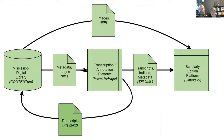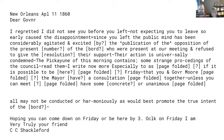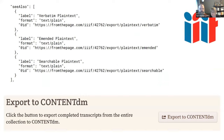Now we have a transcript we could use to update the digital library metadata, but there's a big problem: the transcript is richly annotated and includes names of contributors, tags, and a lot of text that really should not be part of a full-text search. So From the Page produces three separate kinds of plain text transcripts that strip or transform the tags appropriately. This verbatim plain text transcript is what ContentDM and most other projects are expecting. We can expose it via the IIIF API for harvesting, and we're able to push those transcripts directly into ContentDM using their SOAP-based Catcher API. A push of a button updates all the metadata in ContentDM and the Mississippi Digital Library.